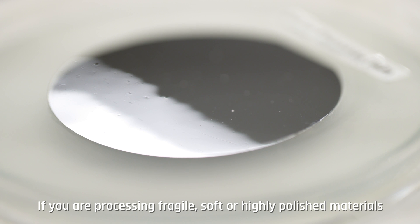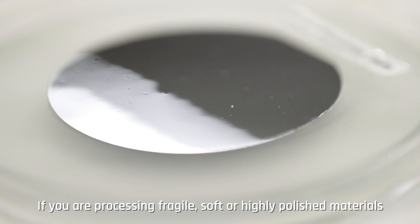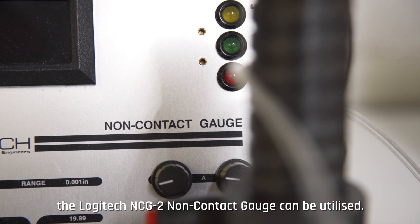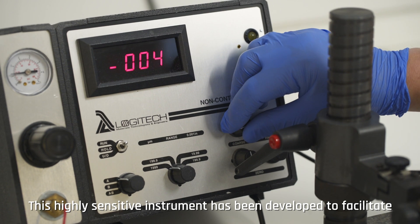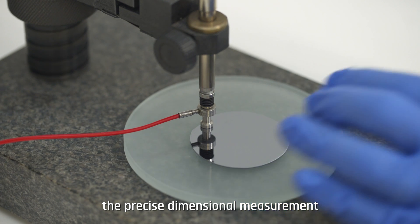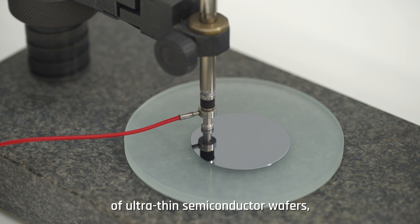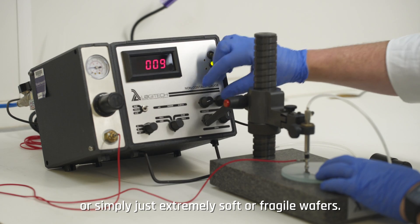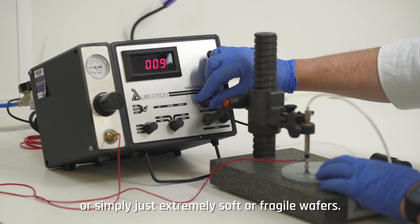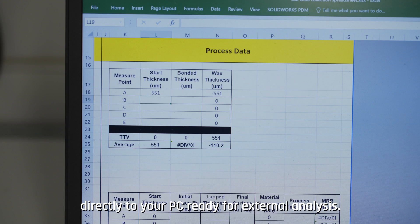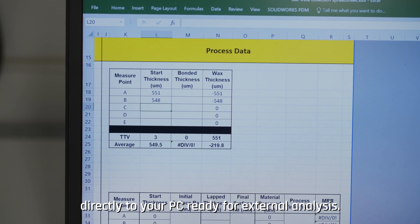If you are processing fragile, softer, highly polished materials, the Logitech NCG2 non-contact gauge can be utilized. This highly sensitive instrument has been developed to facilitate the precise dimensional measurement of ultra-thin semiconductor wafers, soft organic crystals, high quality optical components, or simply just extremely soft or fragile wafers. Logitech gauges transmit data directly to your PC ready for external analysis.